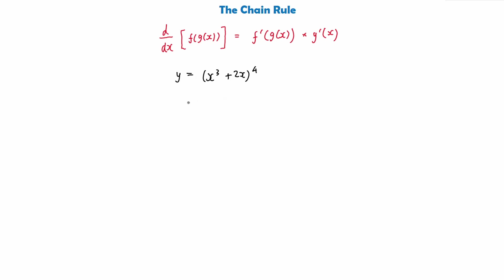Let's say that y is equal to this and apply the chain rule. The first thing we do is differentiate the bit outside the brackets — which is just to the power of 4 — so we bring the 4 down to the front. Then we keep g(x), the bit inside the bracket, the same: x³ + 2x. And because we're differentiating, we take away 1 from the power, giving us 3.